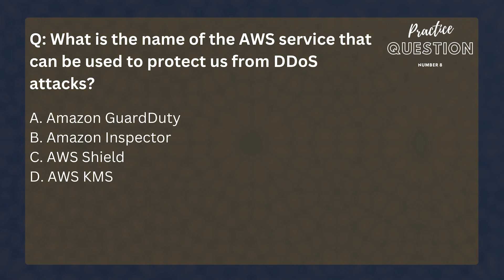What is the name of the AWS service that can be used to protect us from DDoS attacks? Amazon GuardDuty, Amazon Inspector, AWS Shield, AWS KMS. The answer is Shield — this is the service that we can rely on to stop DDoS attacks.